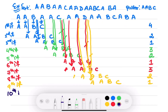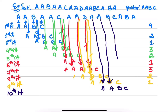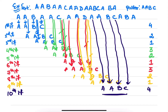Let's move to the tenth iteration — pattern AABC. If you see here, this A matches with this A, this A matches with this A, this B matches with this B, and this C matches with this C. Therefore we got our pattern, and number of comparisons are 4.